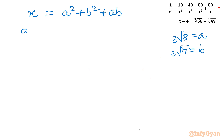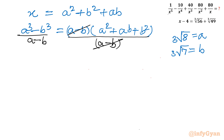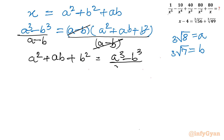Now we know an identity: a cube minus b cube equals a minus b, times a square plus ab plus b square. If I divide both sides by a minus b, the brackets cancel out. So a square plus ab plus b square can be written as a cube minus b cube, divided by a minus b.